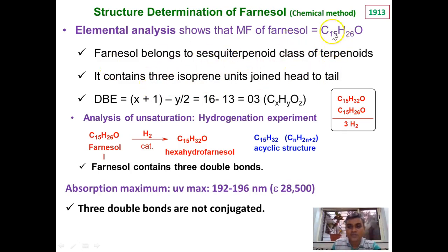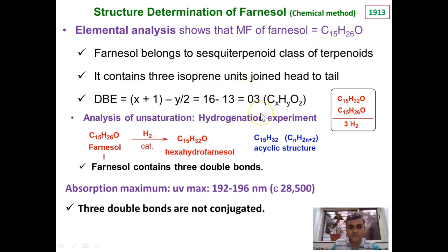Another piece of information from the molecular formula is the degree of unsaturation, or double bond equivalence — that is, how many double bonds or rings the molecule contains, or a combination of both. For a molecule CxHyOz, the double bond equivalence is calculated by the formula (X + 1 − Y/2). Substituting the values for Farnesol gives a double bond equivalence of 3. So Farnesol shows 3 degrees of unsaturation — it may contain 3 double bonds, 3 rings, or combinations thereof, and this must be investigated further.